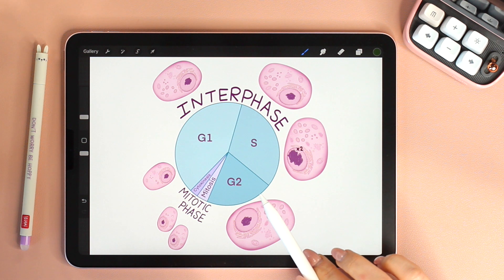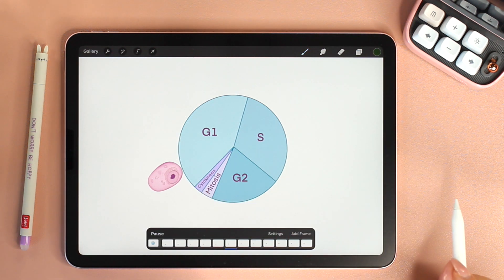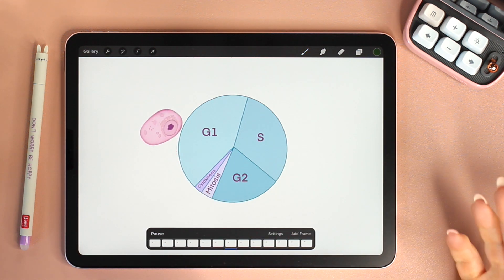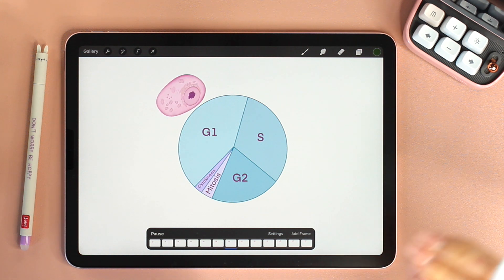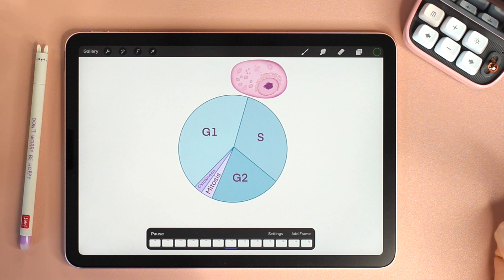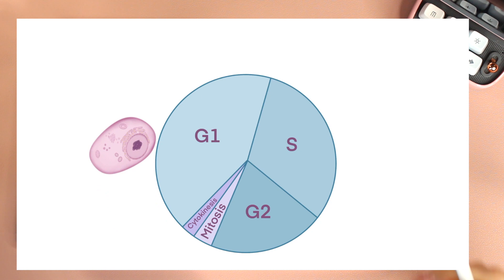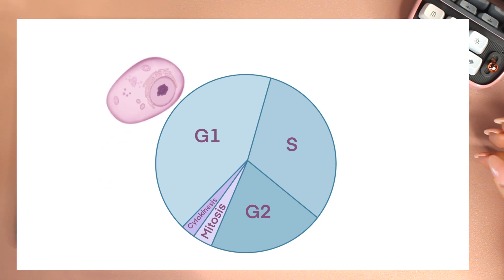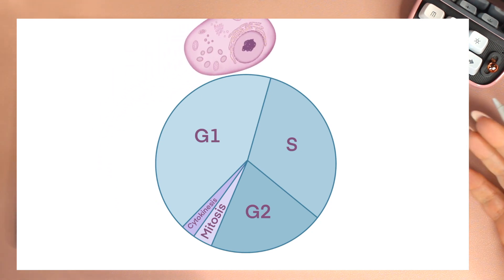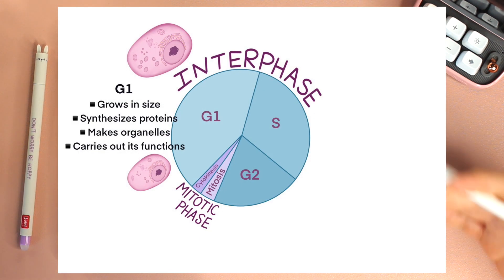Interphase is divided into three sub-phases: G1, S, and G2. G1 stands for GAP1 because initially they thought that this is a gap phase in which the cell does nothing. But that's not the case. As you can see in this animation, the cell grows in size. It synthesizes proteins, makes organelles, and it carries out its functions. The cell is active and it's definitely not in a gap phase.